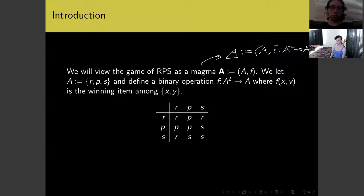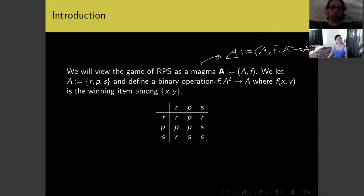We can view rock, paper, scissors as a magma. We take our underlying set A to consist of three things: R, P, and S, standing for rock, paper, and scissors. We define a binary operation where F(X, Y) is the winning item from among X and Y. The rules are that rock beats scissors, scissors cut paper, and paper covers rock — a cyclic relationship. And if we both choose rock, we tie and both win.